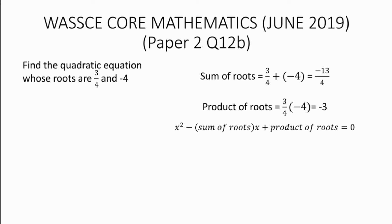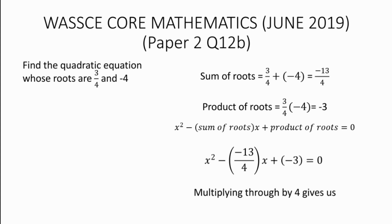The product of roots equals 3/4 multiplied by minus 4, which gives minus 3. Inserting into the formula: x squared minus (minus 13/4) times x plus (minus 3) equals 0. To eliminate the fraction, we multiply through by 4, giving us 4x squared plus 13x minus 3 equals 0. This is our quadratic equation whose roots are 3/4 and minus 4.